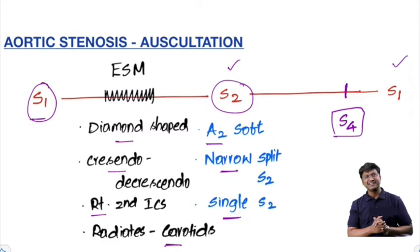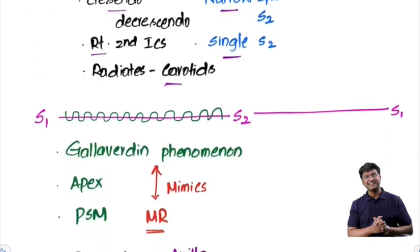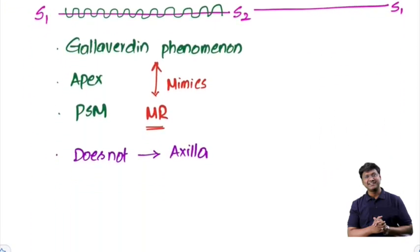Another very important phenomenon in aortic stenosis is the Gallivardin phenomenon. The Gallivardin phenomenon is the murmur of aortic stenosis that radiates or is conducted or is heard at the apex of the heart, and it is heard as a holosystolic murmur or pansystolic murmur.